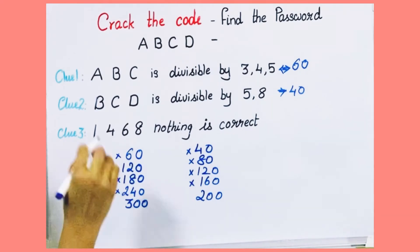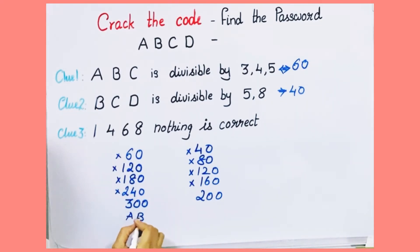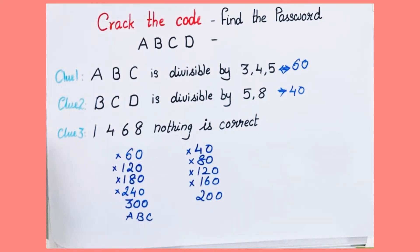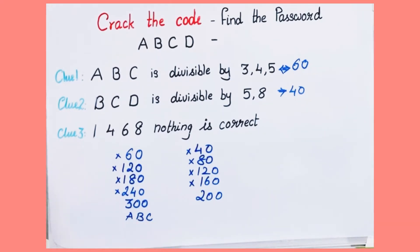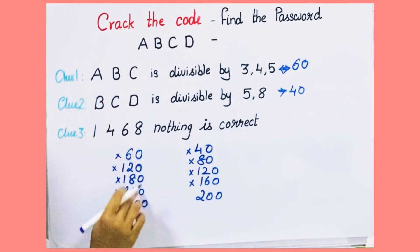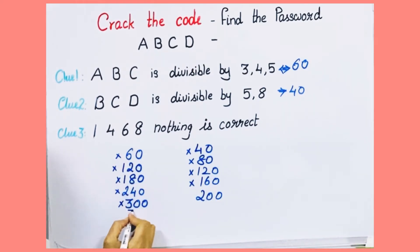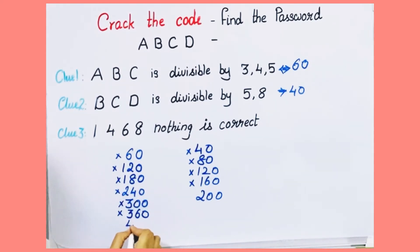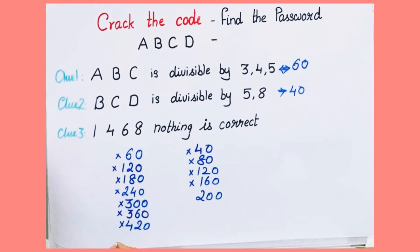But if ABC is 300, then BC would have to be 00. However, BCD is 200, so BC would be 20 — this is a contradiction, so we can't take 300. Next multiples of 60: 360 has a 6, can't take. 420 has a 4, can't take. 480 has 4 and 8, can't take.